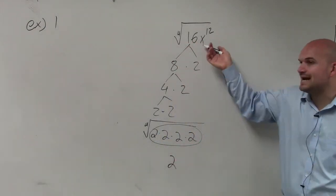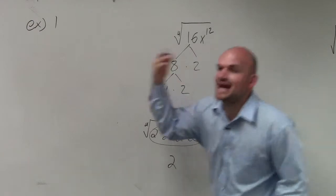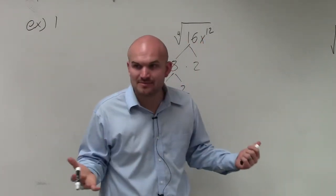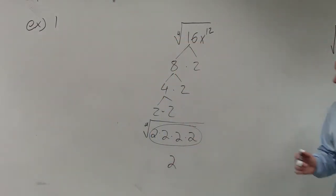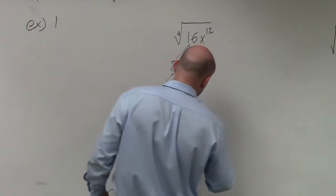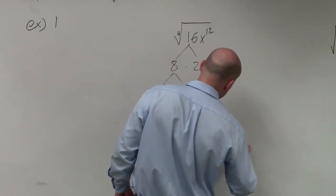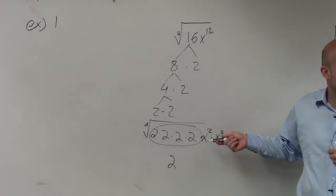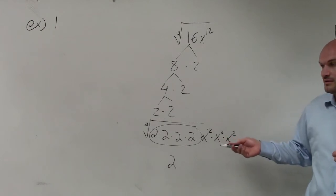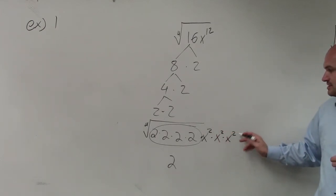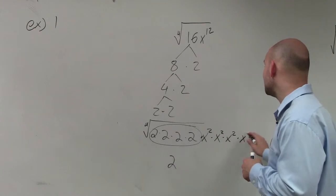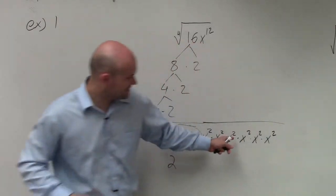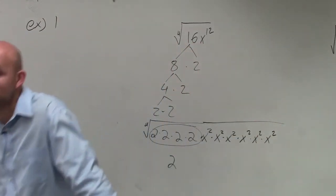We could also look at x to the 12th, which is x times x times x, 12 times. But why write it out that many times? We could also write it as x squared times x squared times x squared. Even with this method, how many times would I have to multiply x squared by itself to get to x to the 12th? Well, 2, 4, 6 — I'd have to do it 6 times. Do you agree that x squared times x squared times x squared times x squared times x squared times x squared equals x to the 12th?